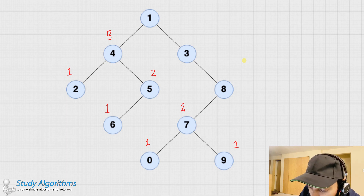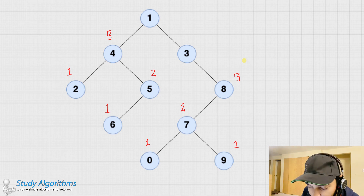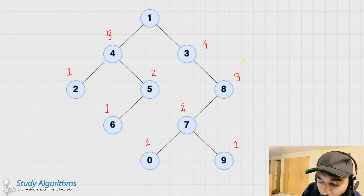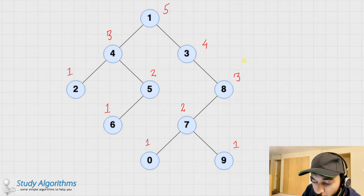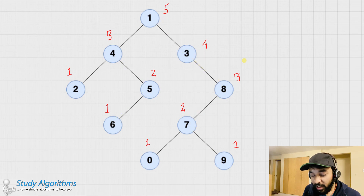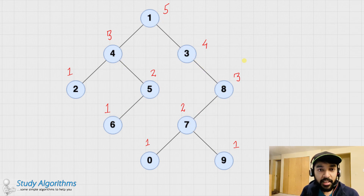Moving on to the parent nodes: node 7 has a depth of 2, node 5 has a depth of 2. When you come to node 4, you need to know the maximum depth. The left subtree has a depth of 1 and the right subtree has a depth of 2. Since we are interested in the longest path, we look at the maximum depth, so the maximum depth at node 4 is 3. The maximum depth at node 8 is also 3 because it has no right subtree. Going up to node 3, it has no left subtree, so its maximum depth is 4. Going to the root, the maximum depth is 5.